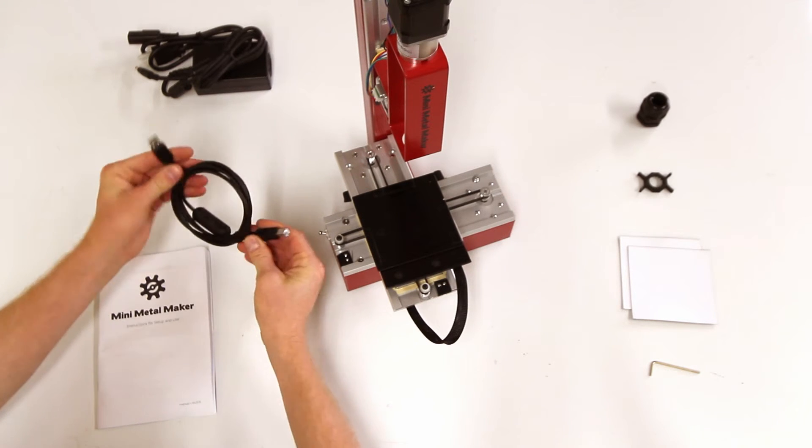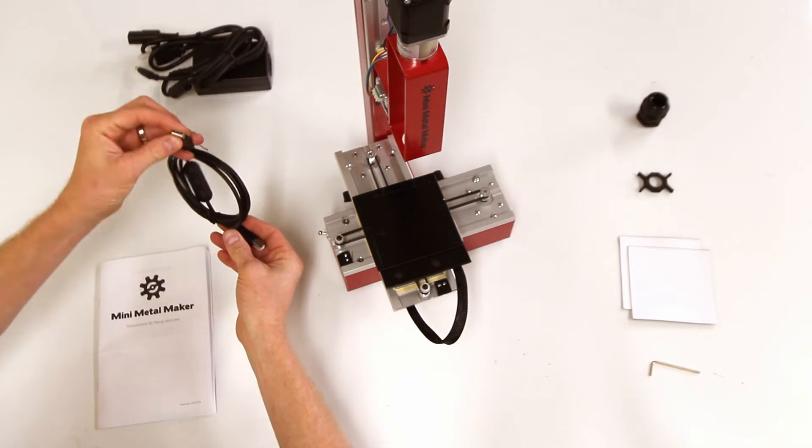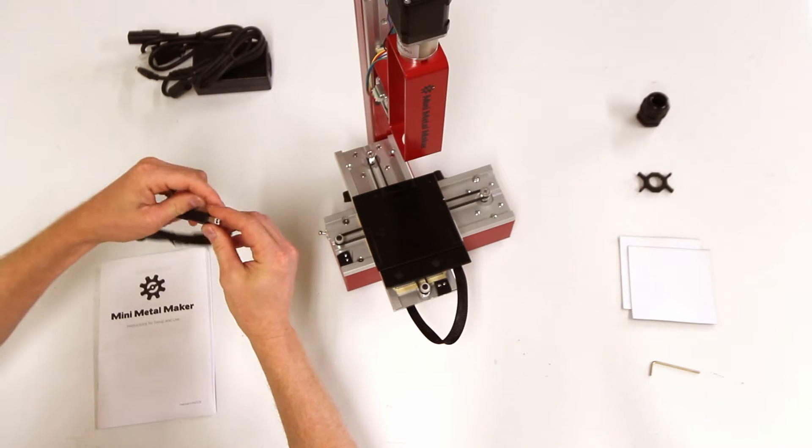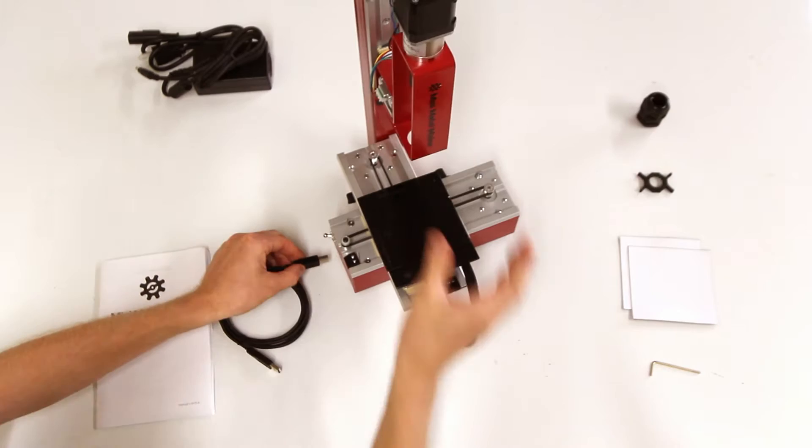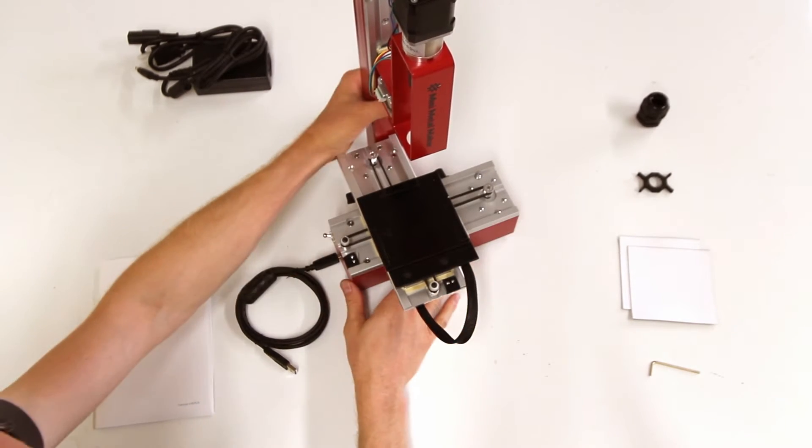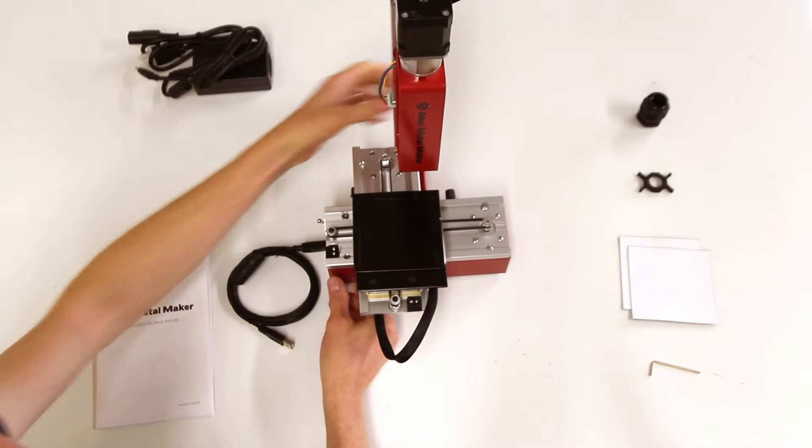It's the same kind of cable that you would use for a normal printer, so it has the normal flat type here and the printer type here. And if you look on the side of the Mini Metal Maker, there is a jack right below the power switch.